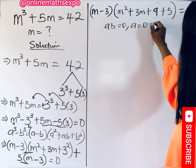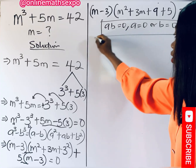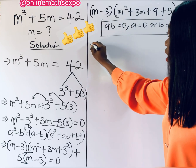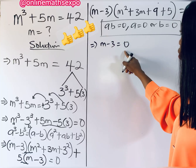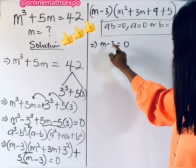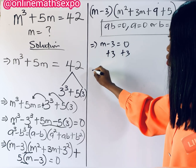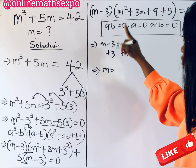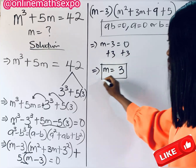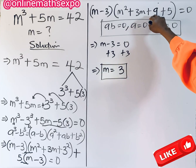Applying that rule, either m minus 3 equals 0 or m² plus 3m plus 14 equals 0. Working out the first factor: add 3 to both sides, and we get m equals 3. So we have confirmed our first value of m as 3, just as we found at the beginning.